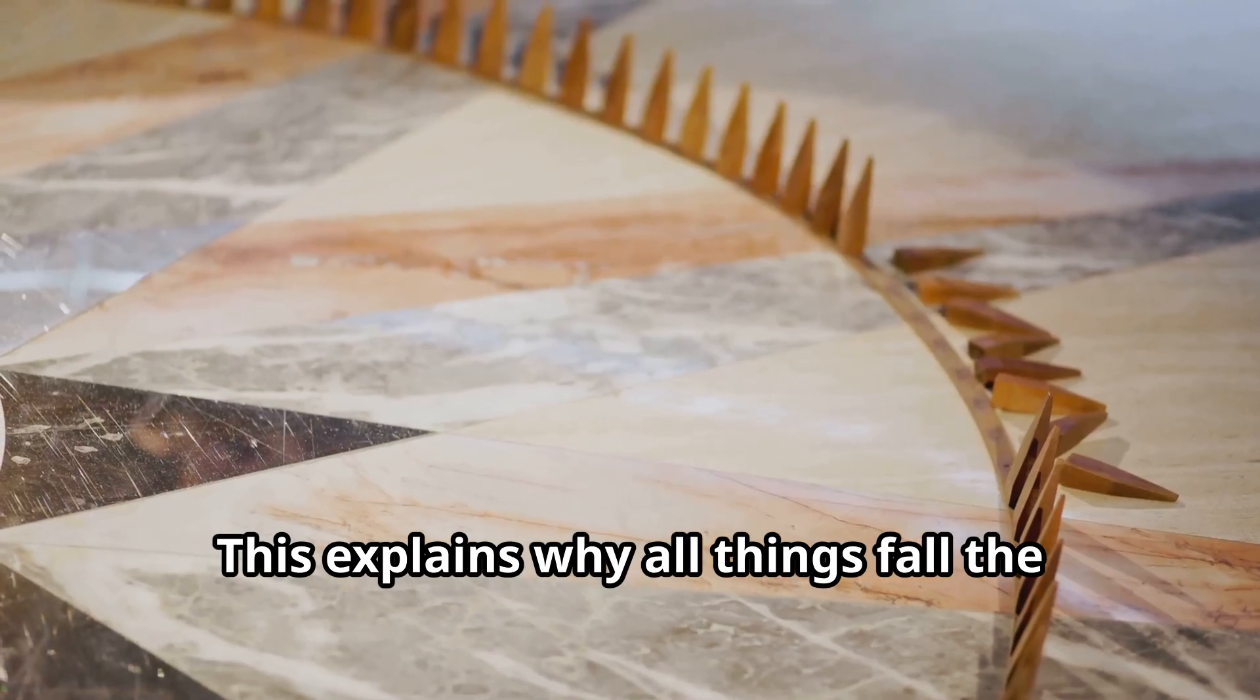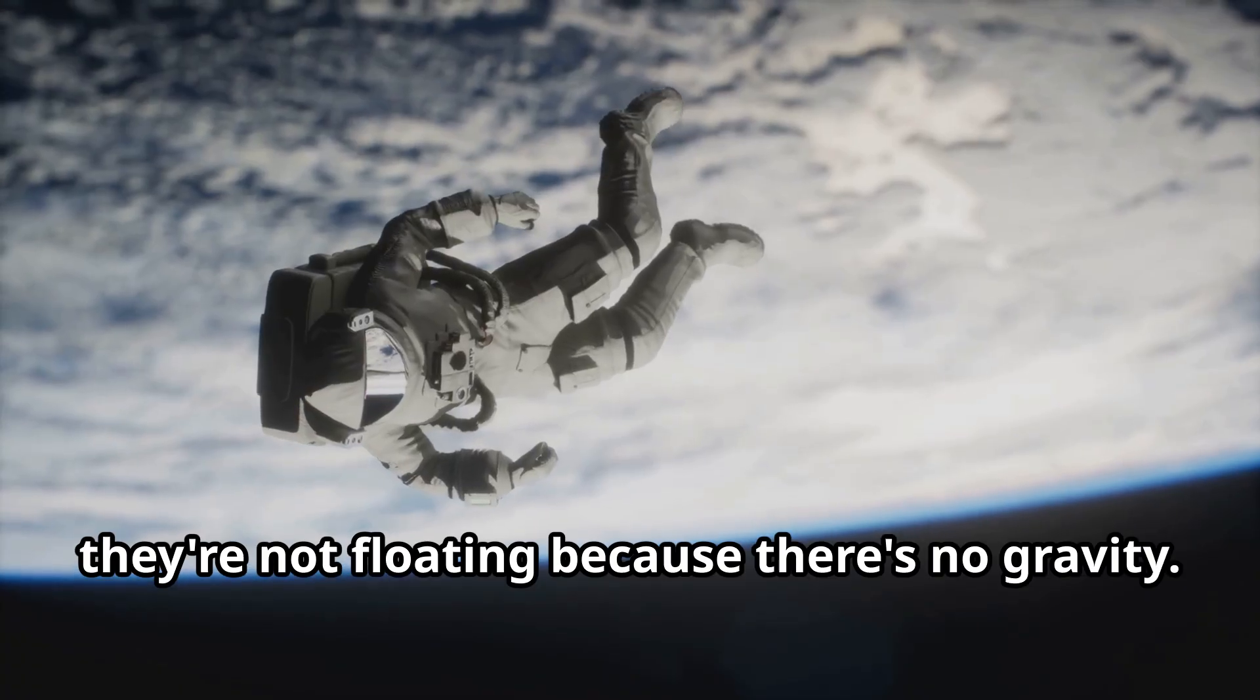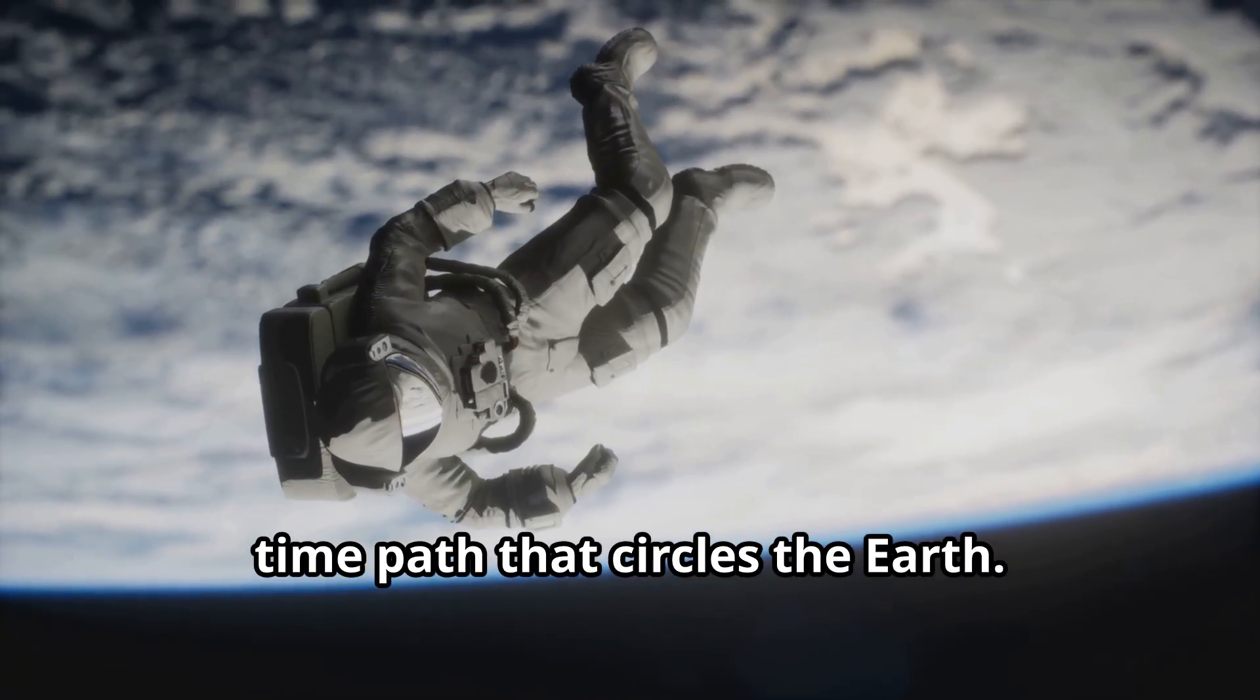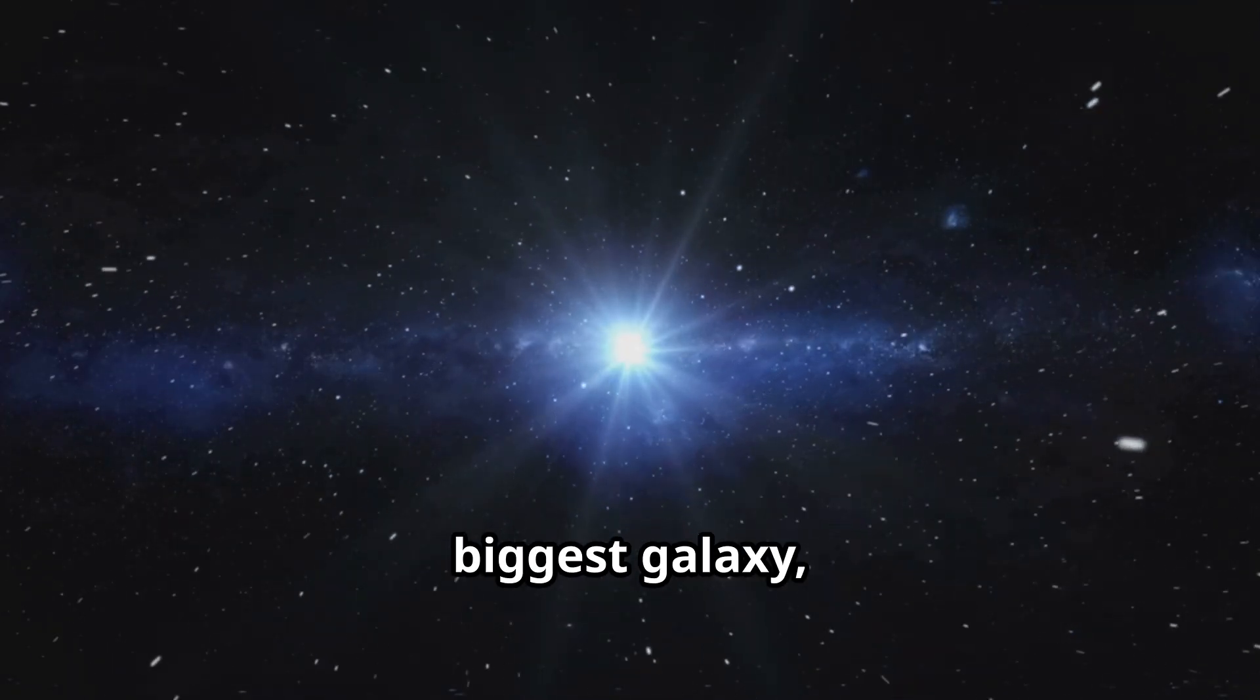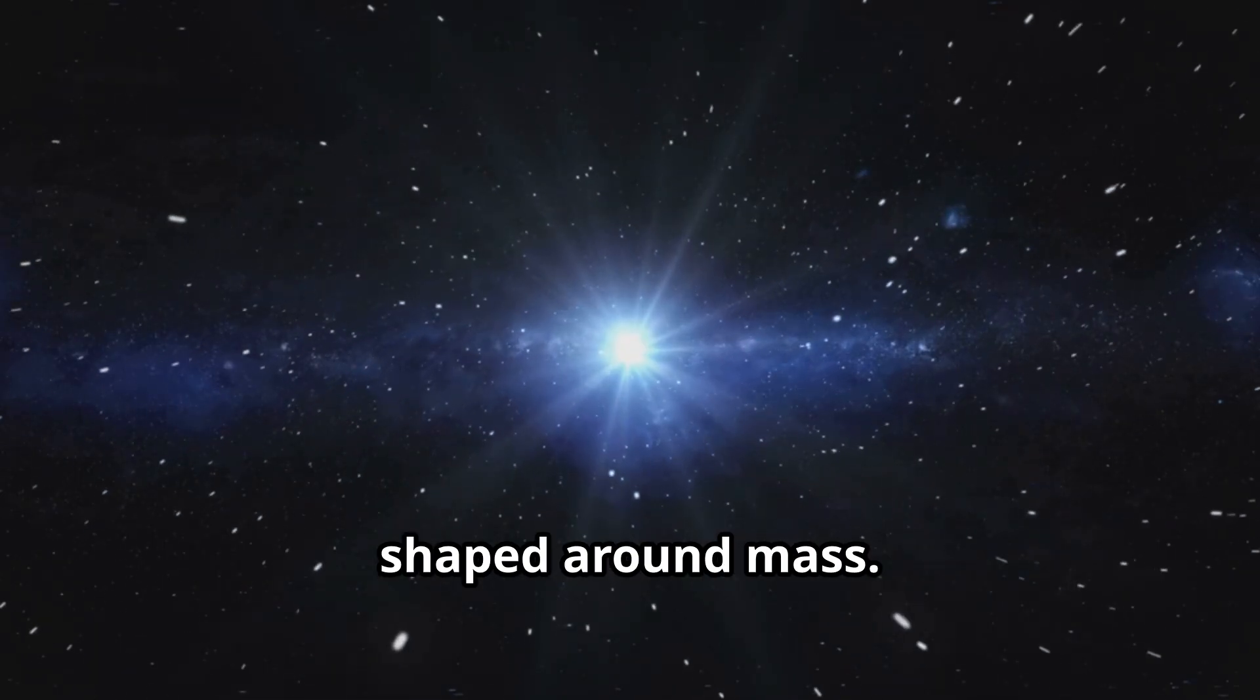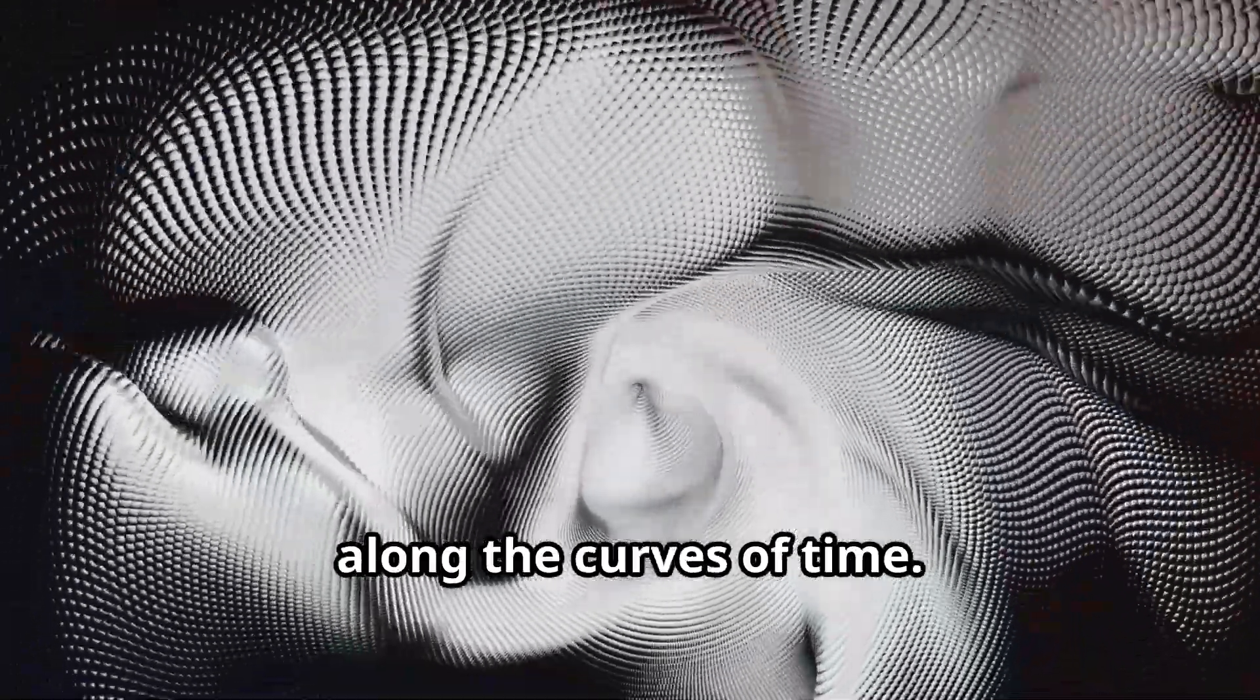This explains why all things fall the same way, no matter how heavy they are. Even when astronauts orbit Earth, they're not floating because there's no gravity. They're actually falling along a curved time path that circles the Earth. Everywhere in the universe, from the tiniest grain of dust to the biggest galaxy, things move according to how time is shaped around mass. The simple act of falling turns into something beautiful, an object dancing along the curves of time.